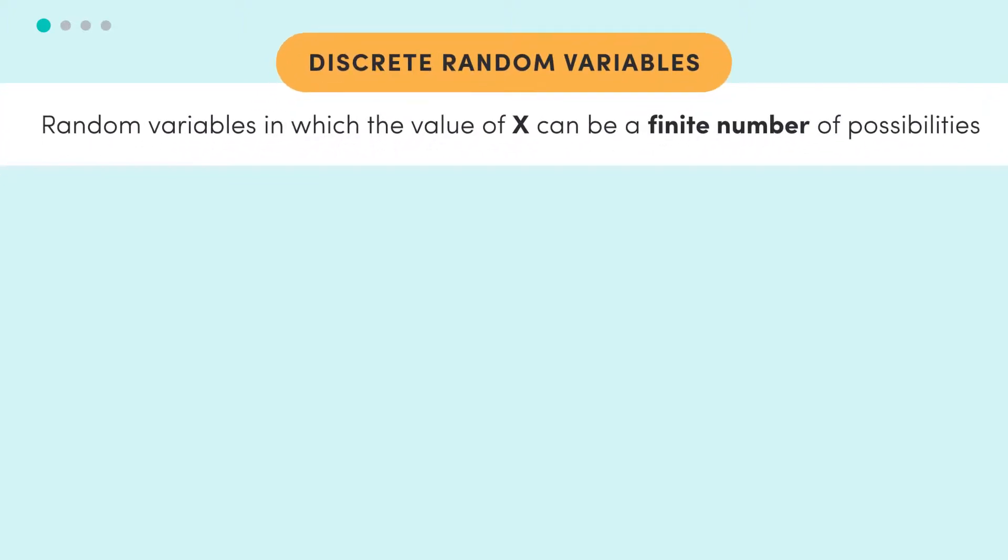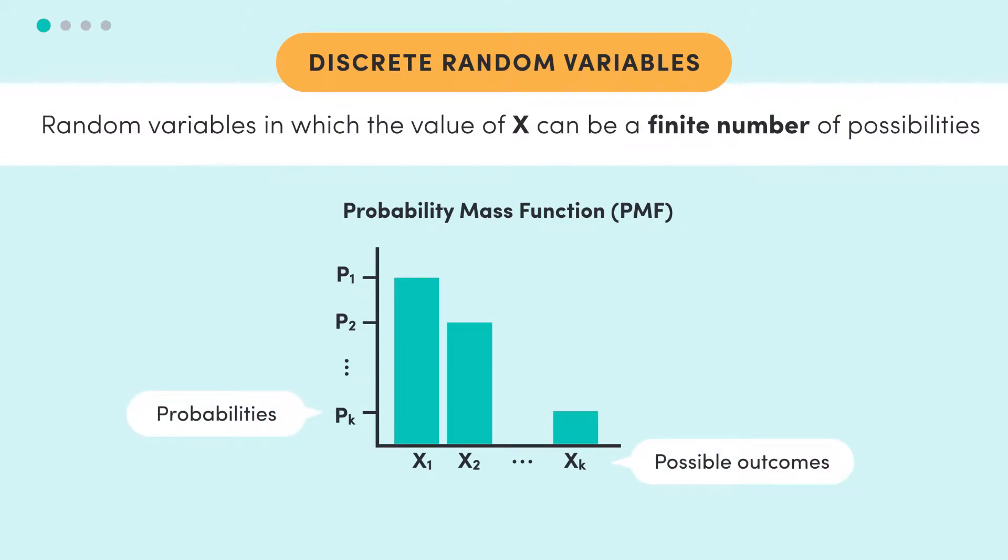For discrete random variables, we use what's called a probability mass function to explain the probability of particular outcomes. We can directly express the probability, p, that our random variable, big X, would equal a particular value, say little x. And we can represent this graphically.